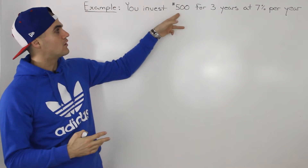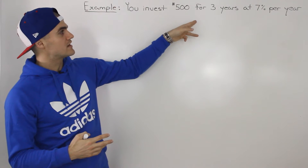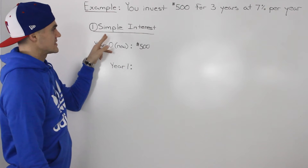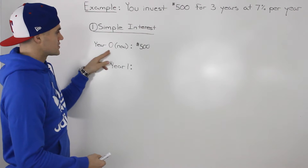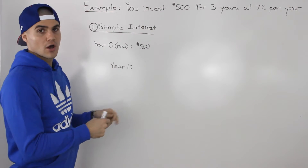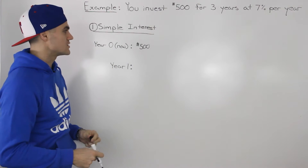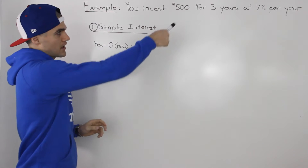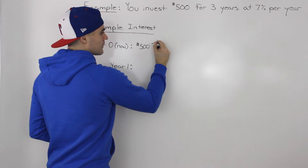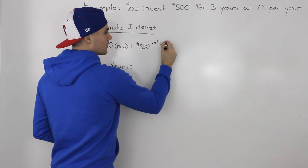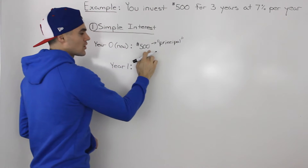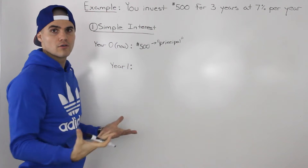Let's say you have $500 and you're going to invest it for three years at 7% per year with simple interest. In year zero, which is right now, you're going to start off with $500 — your principal amount — which is basically the amount you're starting with or the amount you put in of your own money.